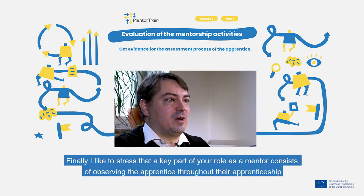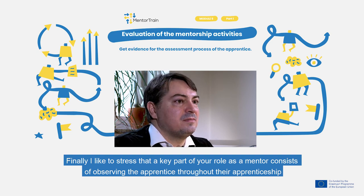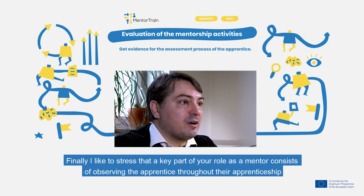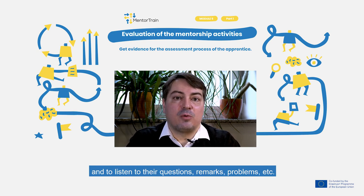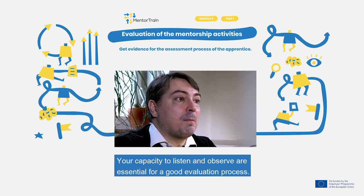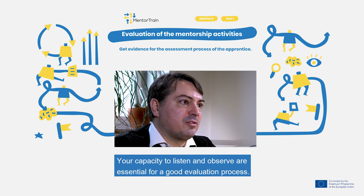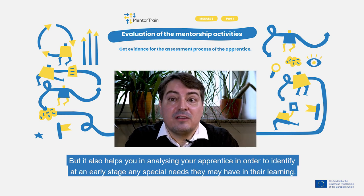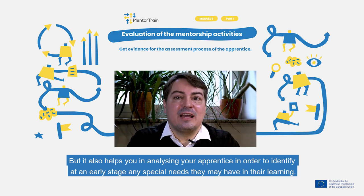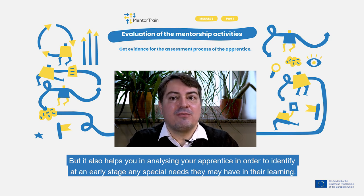Finally, I like to stress that the key part of your role as a mentor consists of observing the apprentice throughout their apprenticeship and listening to their questions, remarks, and problems. Your capacity to listen and observe are essential for a good evaluation process, but it also helps you in analyzing your apprentice in order to identify at an early stage any special needs they might have in their learning.